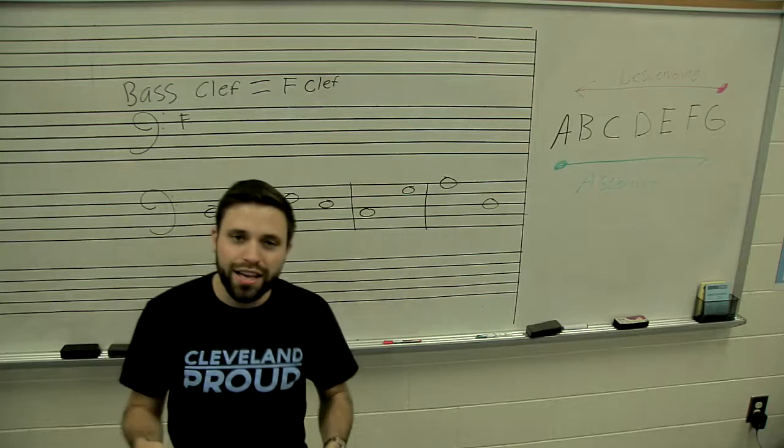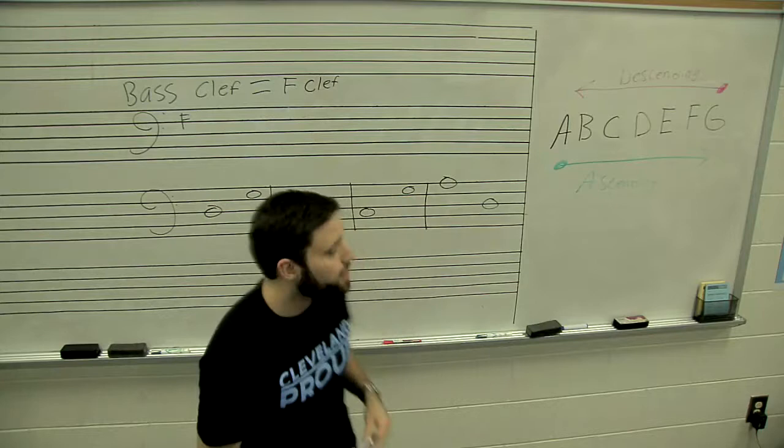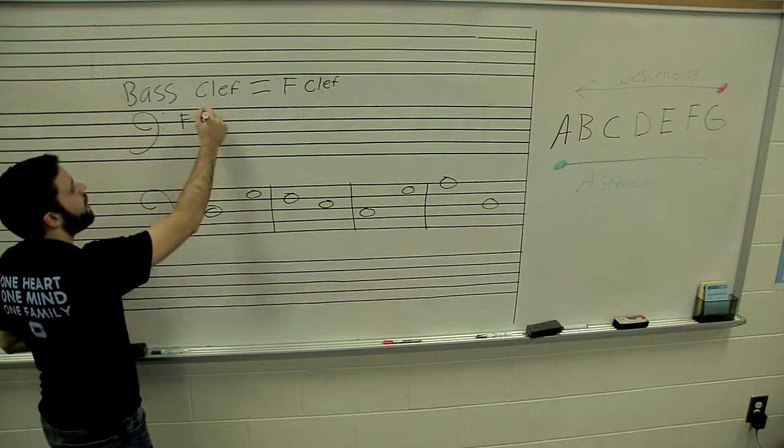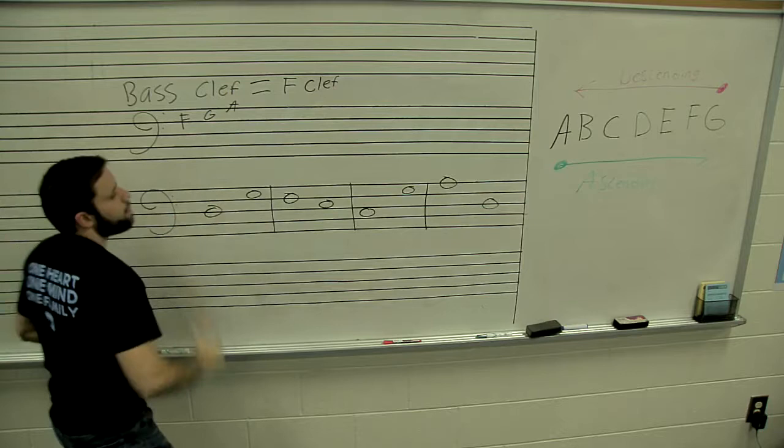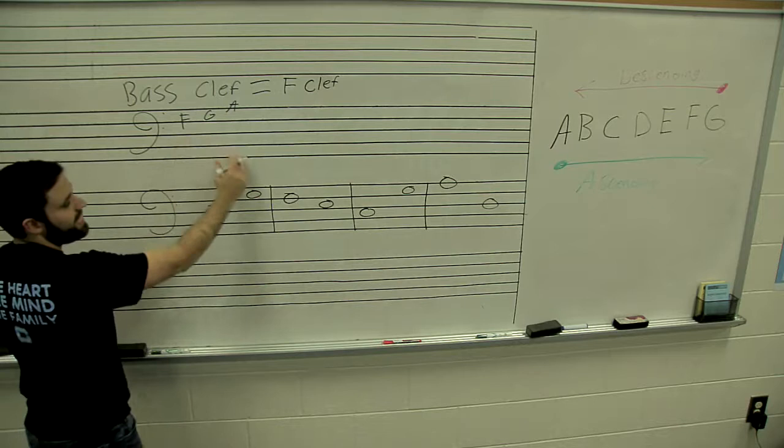So the bass clef tells us where F lies and then based on that knowledge we use our previous knowledge, what we learned last time of the musical alphabet, and apply it to the bass clef. So for example, if here is F, our next note up would be G, our next note up would be A. Because we are ascending, we get to G and we're looping back around to A.